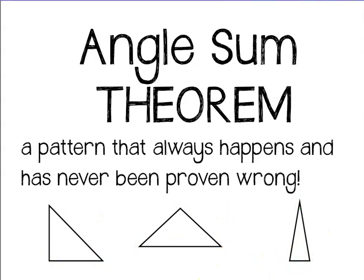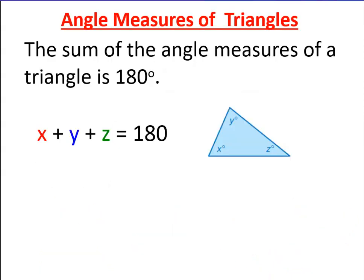So the main idea today is that if you have a triangle, the sum of all three angle measures is equal to 180 degrees. Always.